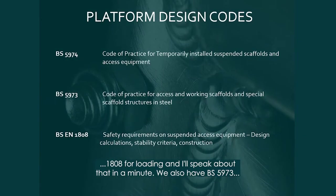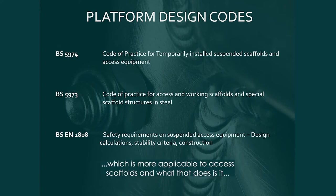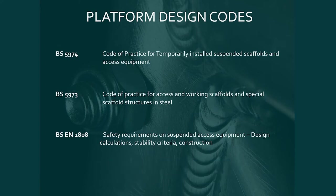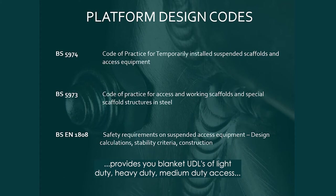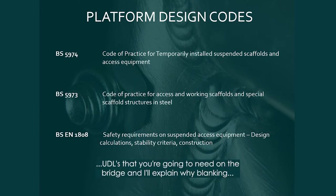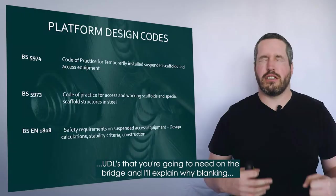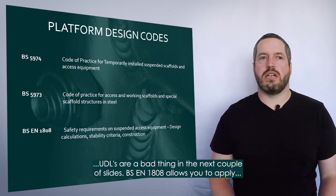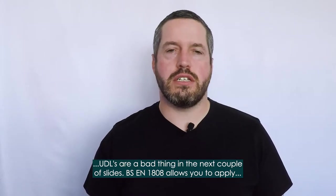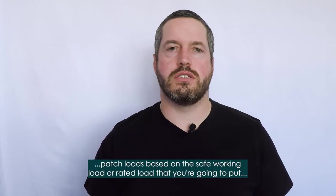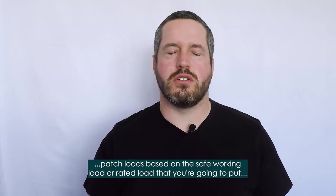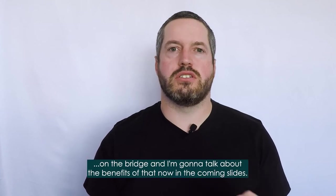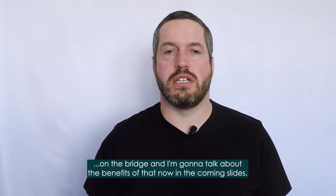You also have BS 5973, which is more applicable to access scaffolds. What that does is provide you blanket UDLs — light duty, medium duty, and heavy duty access UDLs that you're going to need on the bridge. I'll explain why blanket UDLs are a bad thing in the next couple of slides. BSEN 1808 allows you to apply patch loads based on the safe working load or rated load that you're going to put on the bridge, and I'm going to talk about the benefits of that in the coming slides.